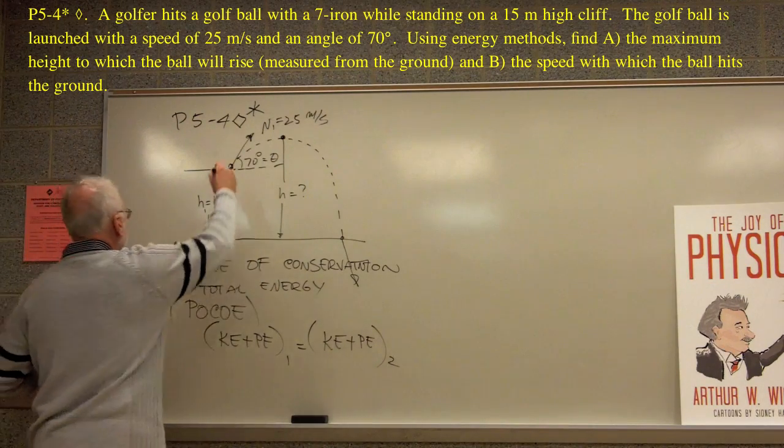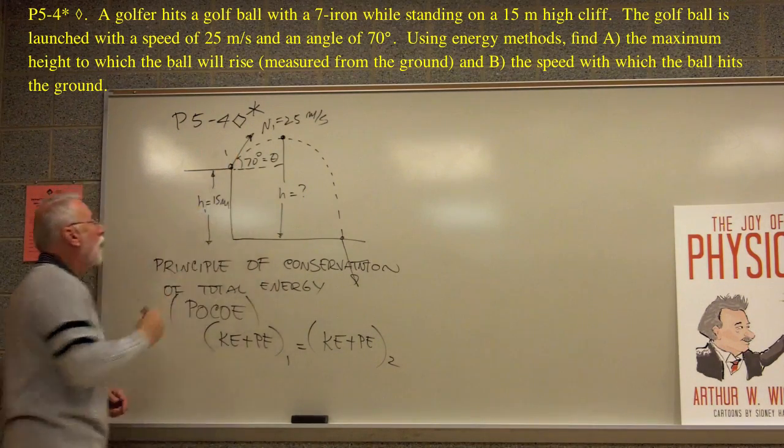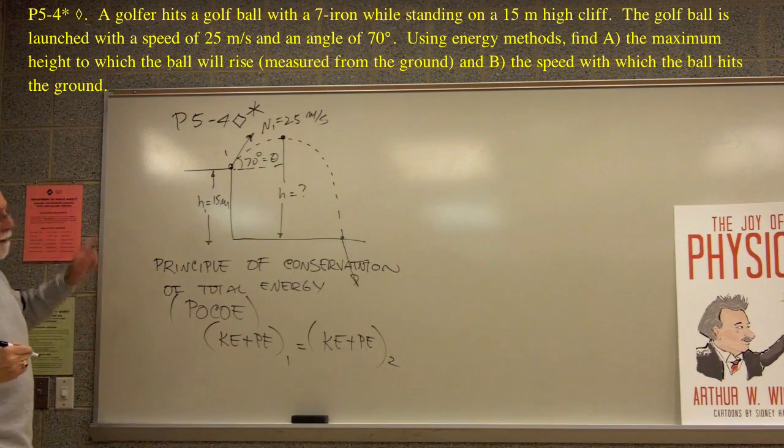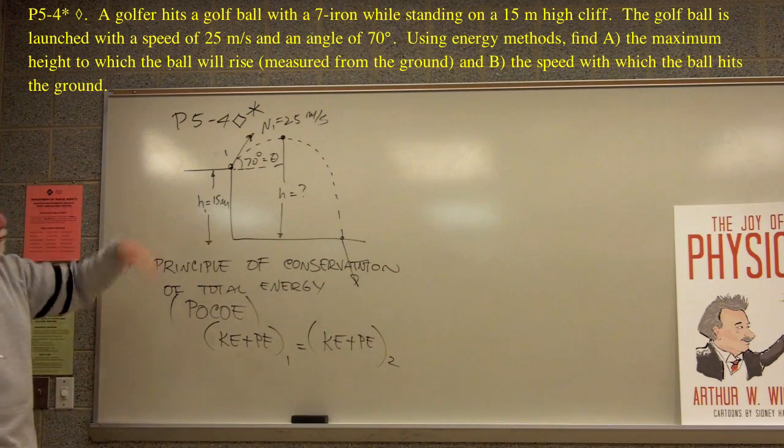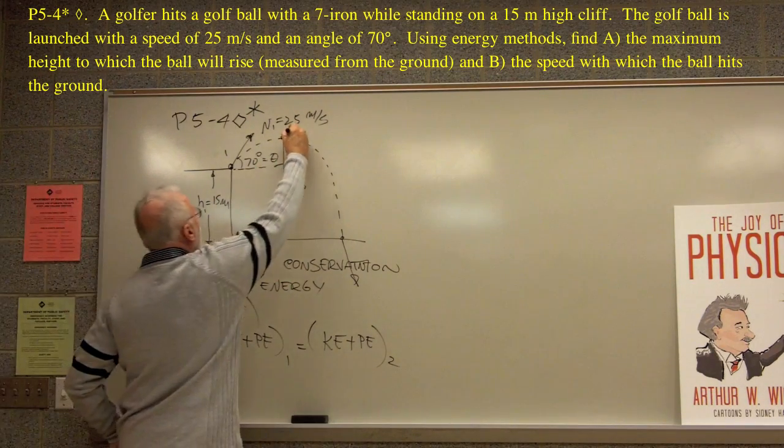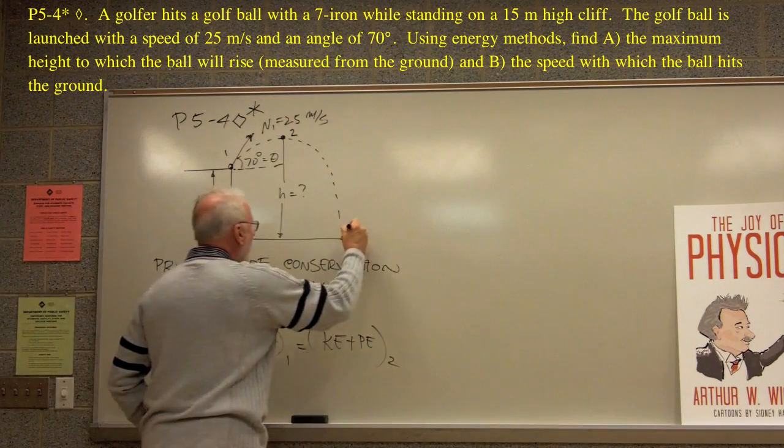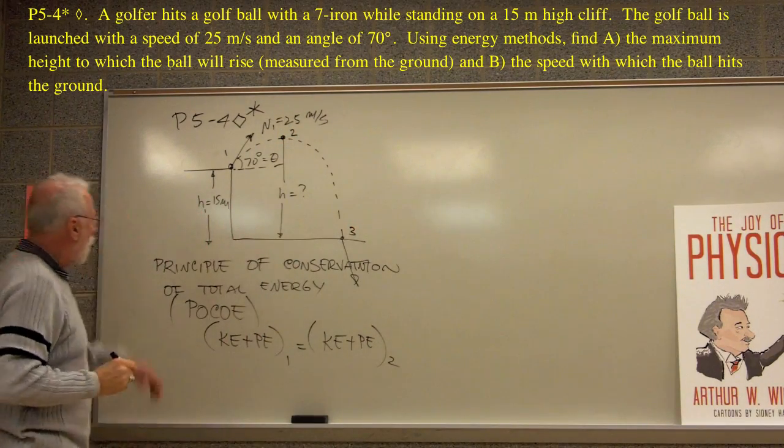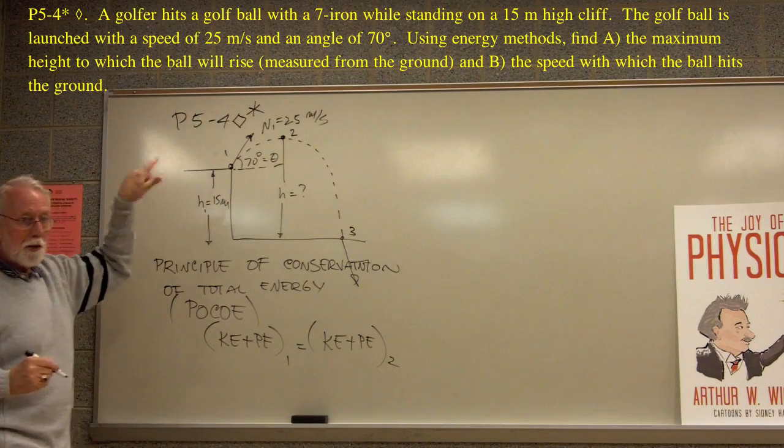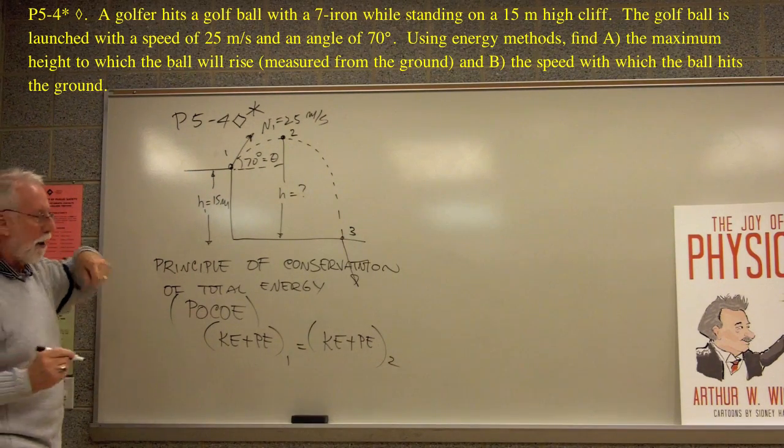Well, one of the points we're interested in because we know something about it is the launch. We're going to call launch one. And next, it says what happens at the top of the trajectory. Let's call that one two. Then it says what happens just before it hits the ground. Let's call that point three. So the total energy then at one is the same as total energy at two is the same as total energy at three.